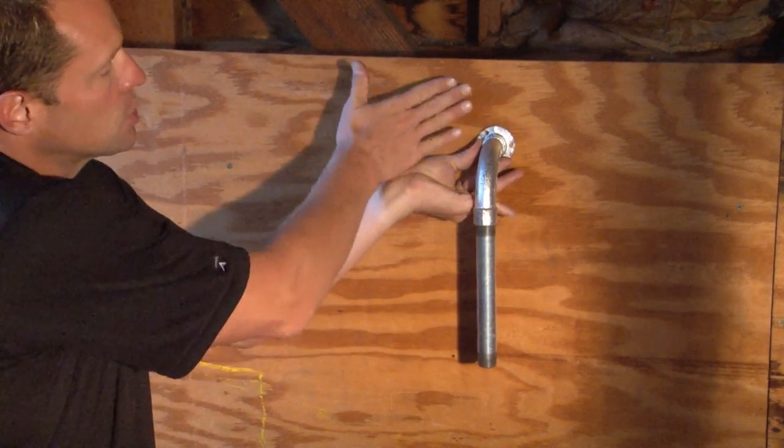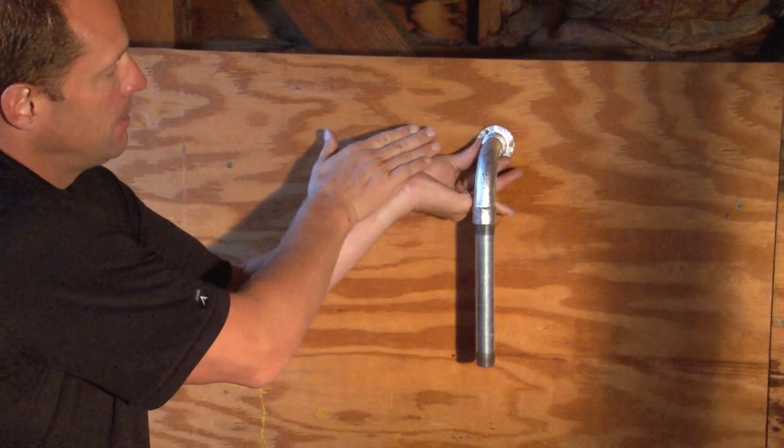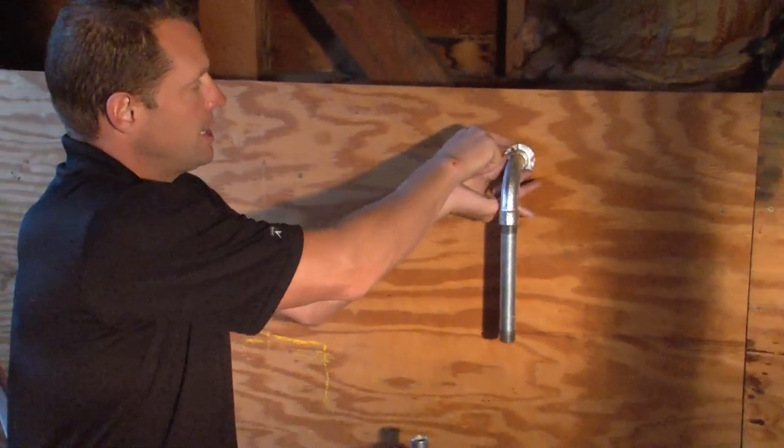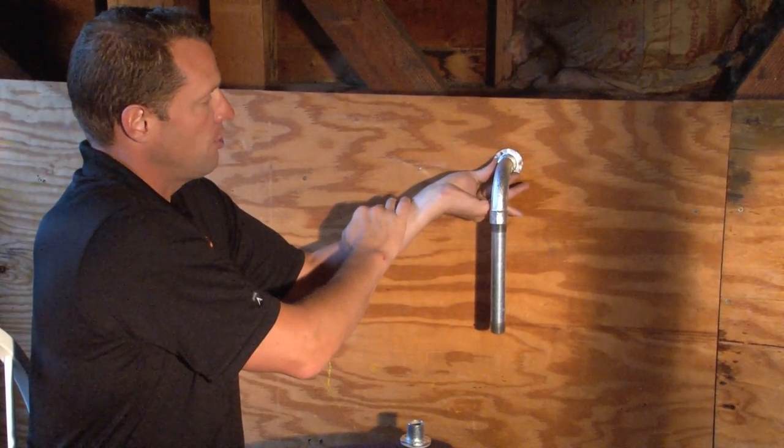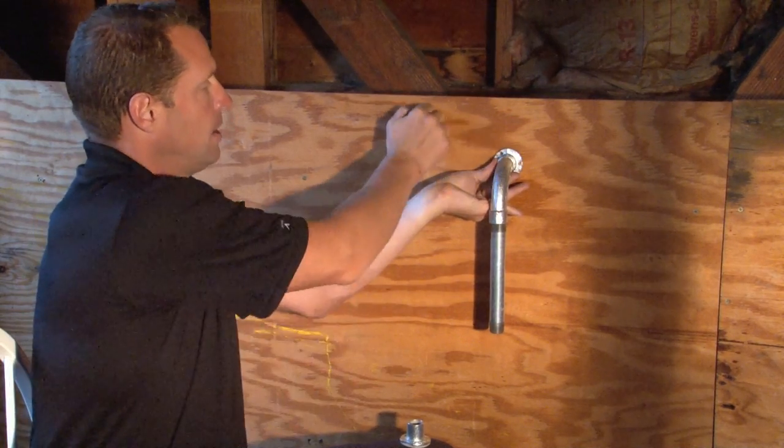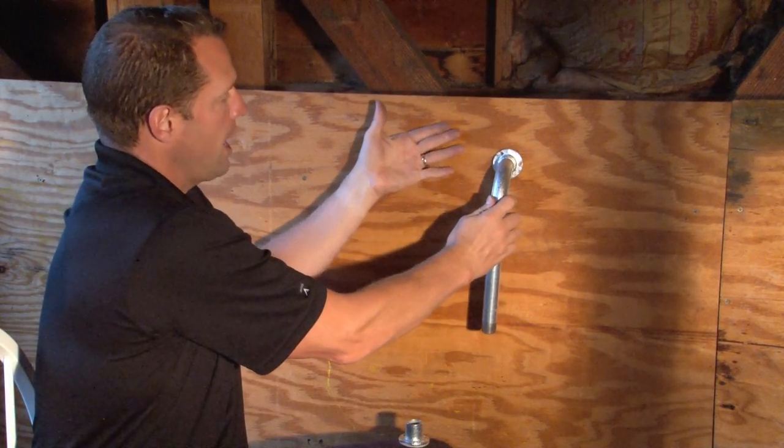The gasket serves as a sealing barrier. When concrete is poured and slurry tries to gum up the threads, the gasket seals it out. Once the concrete hardens, the form is stripped away.